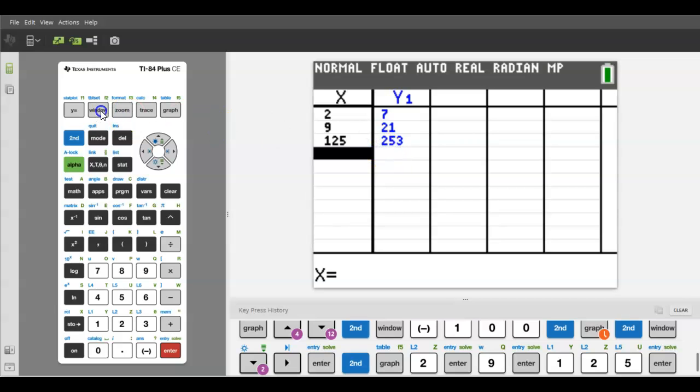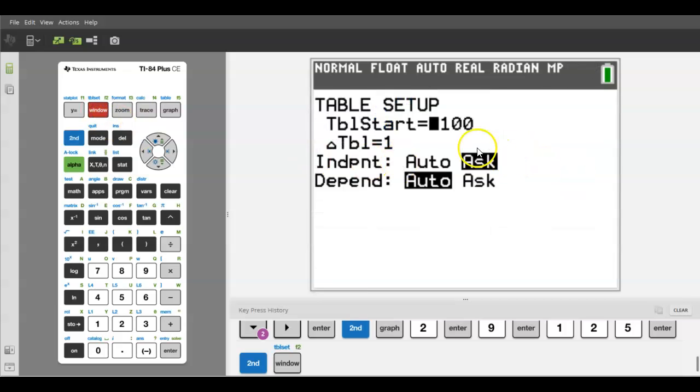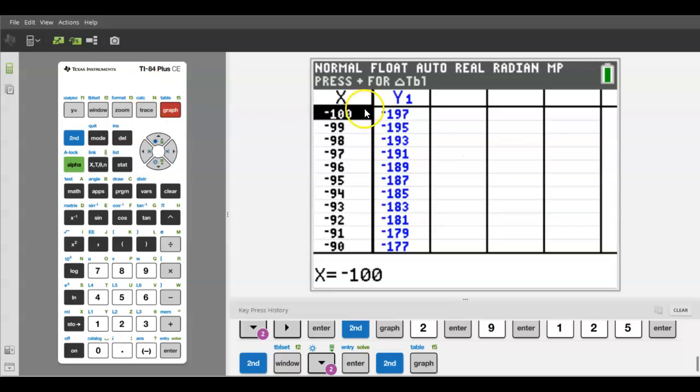That ask feature is really useful. Again, if your table doesn't look right when the teacher asks you to do something, second plus seven one two will reset that, or you can go back to the table set feature and change it back to auto. Then when you go back to the table, it will automatically generate numbers for you.